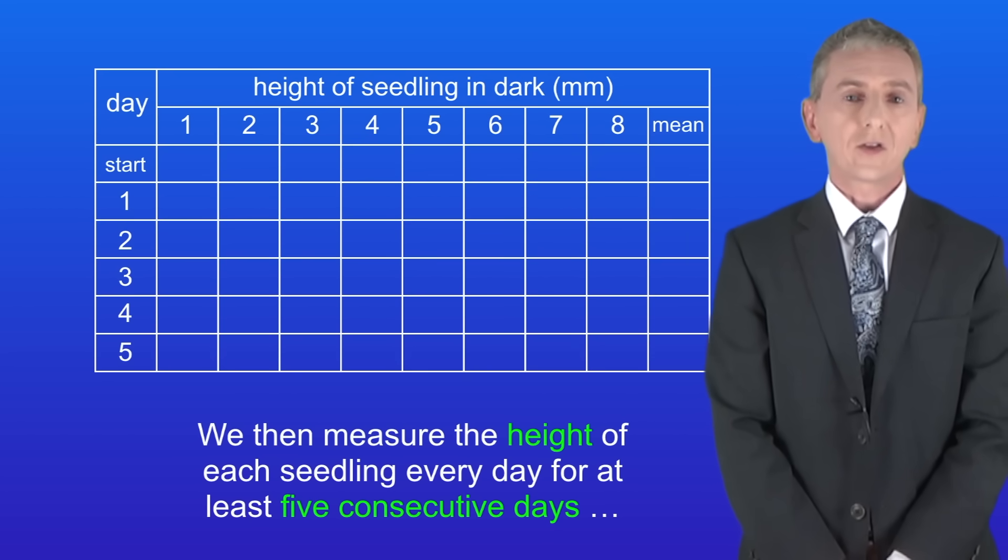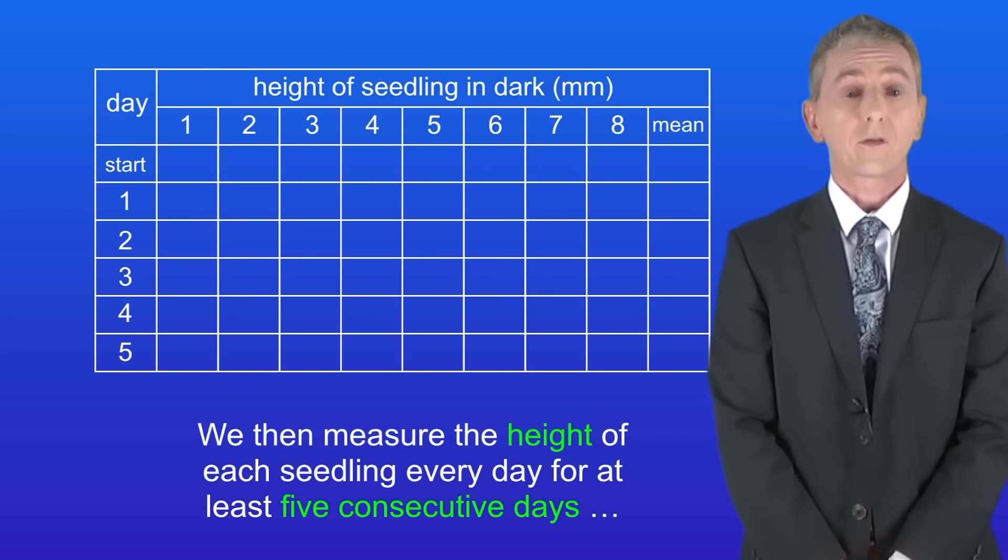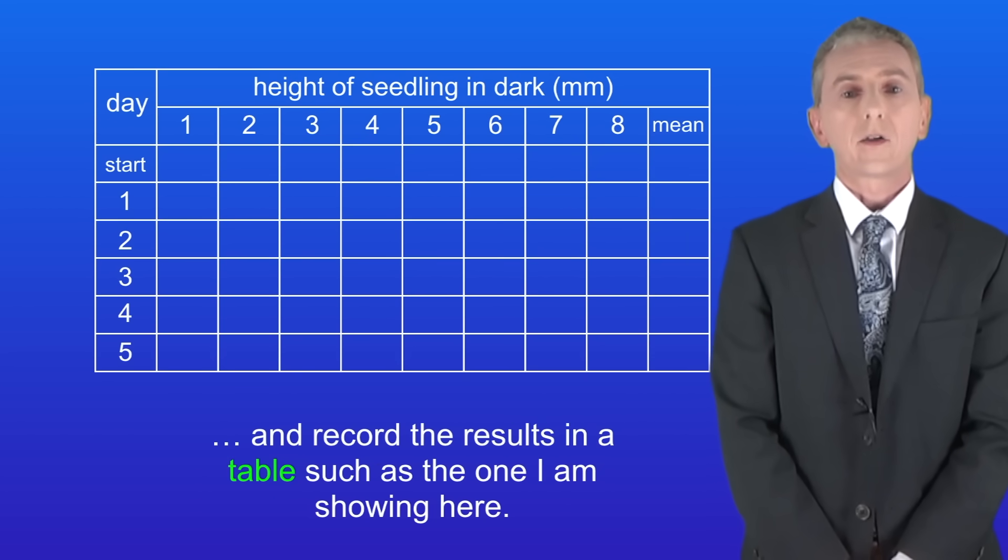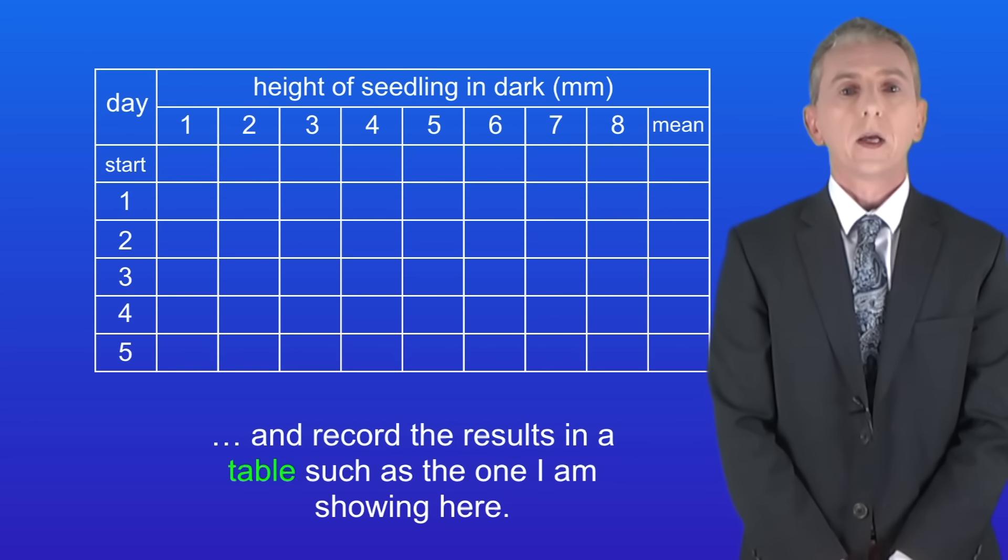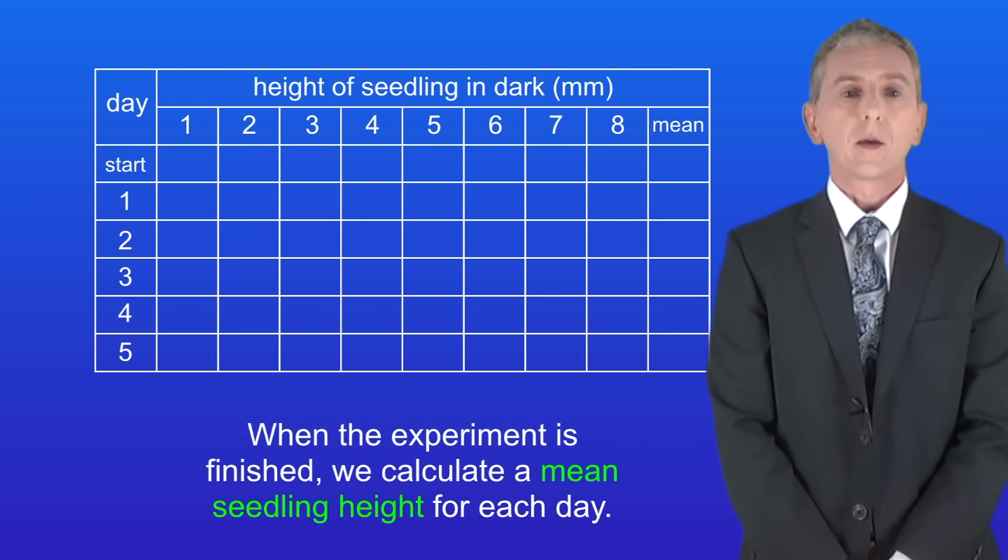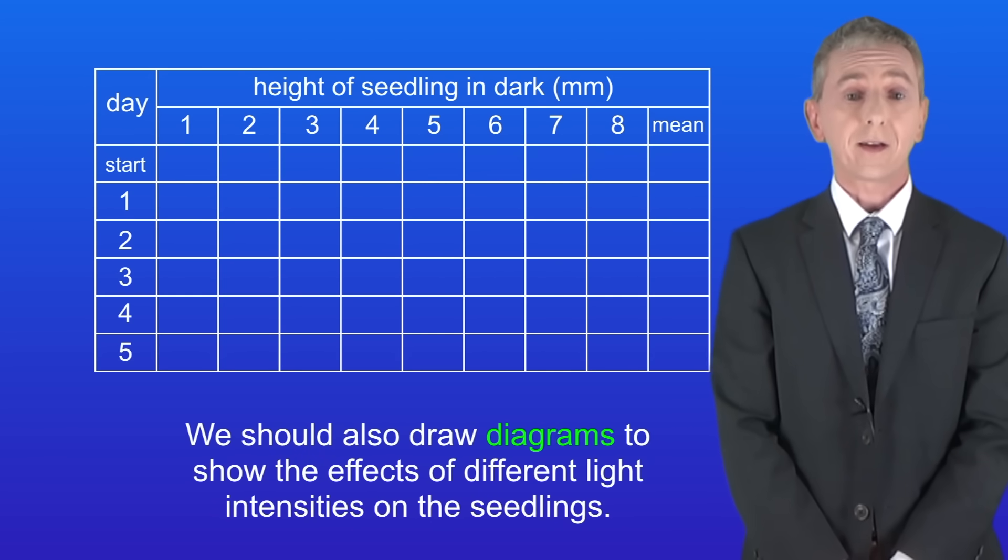We then measure the height of each seedling every day for at least five consecutive days and record the results on a table, such as the one I'm showing here. When the experiment's finished we calculate a mean seedling height for each day. We should also draw diagrams to show the effects of different light intensities on the seedlings.